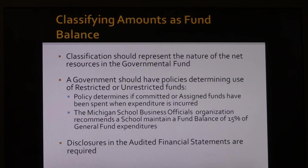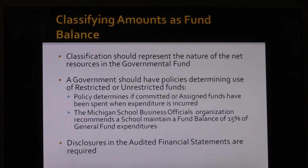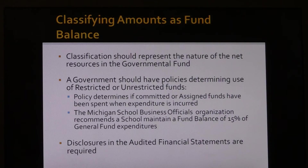One of the most common questions I get regarding fund balance is: how much should we have? The short answer is to ensure that in the event of a loss of revenue, there would be enough to meet the academy's liabilities until another funding source can be obtained. The Michigan School Business Officials recommend that schools maintain a fund balance of 15% of general fund expenditures. It takes time to build up a fund balance — a new school may not have a large fund balance but could accumulate a comfortable amount over time. A school can also consult with their external auditors to obtain a recommendation and perhaps adopt a policy regarding a minimum fund balance.